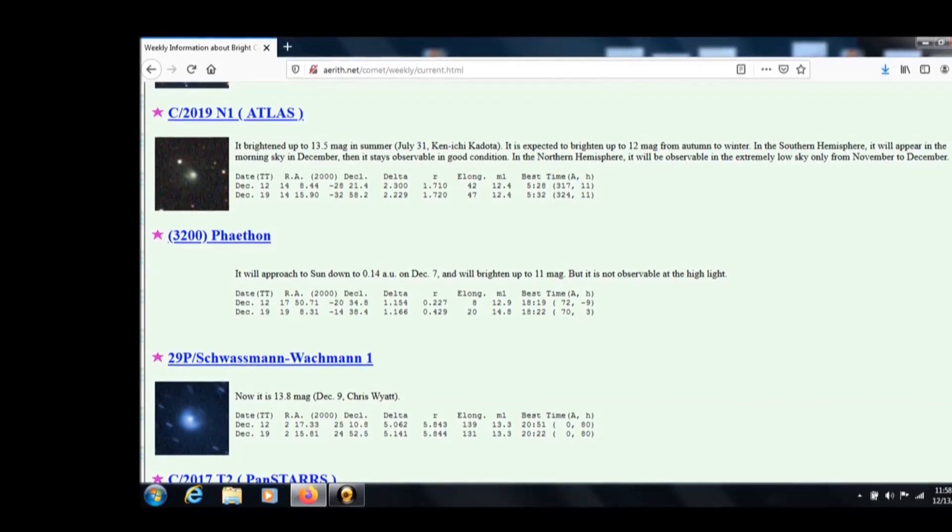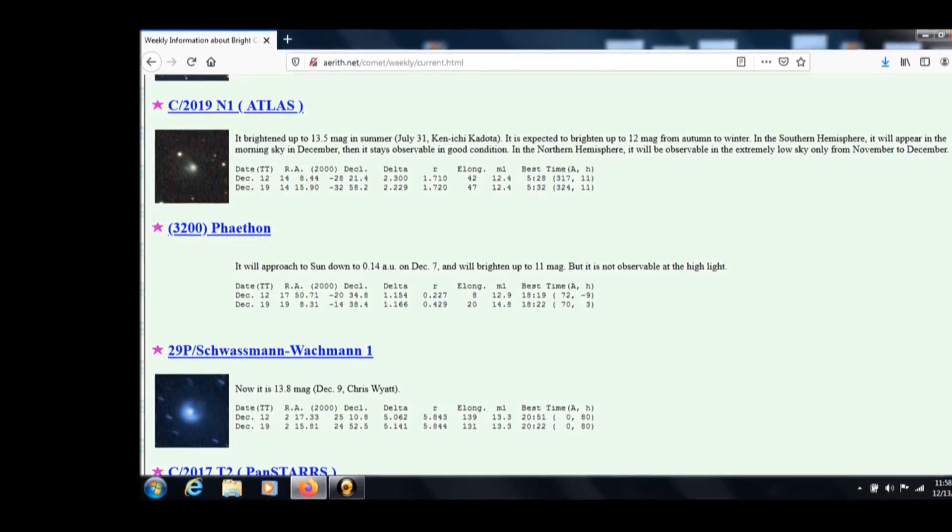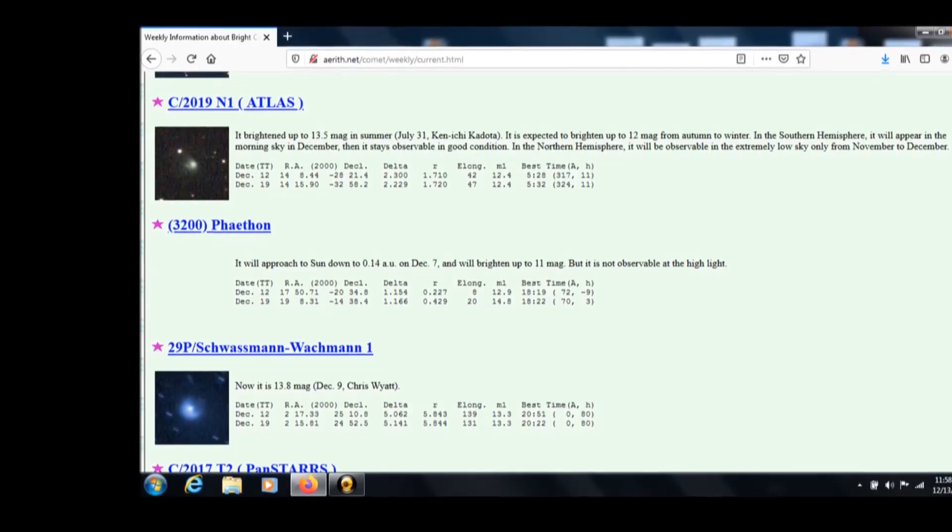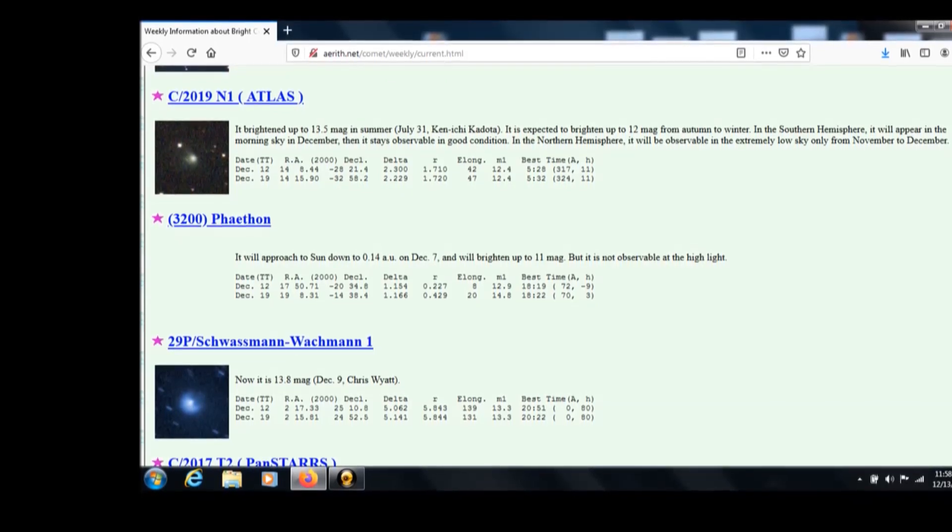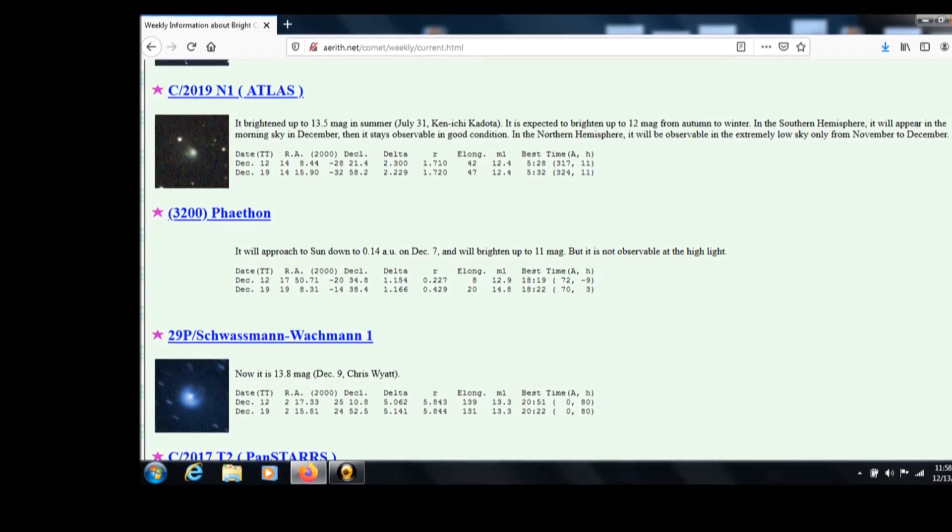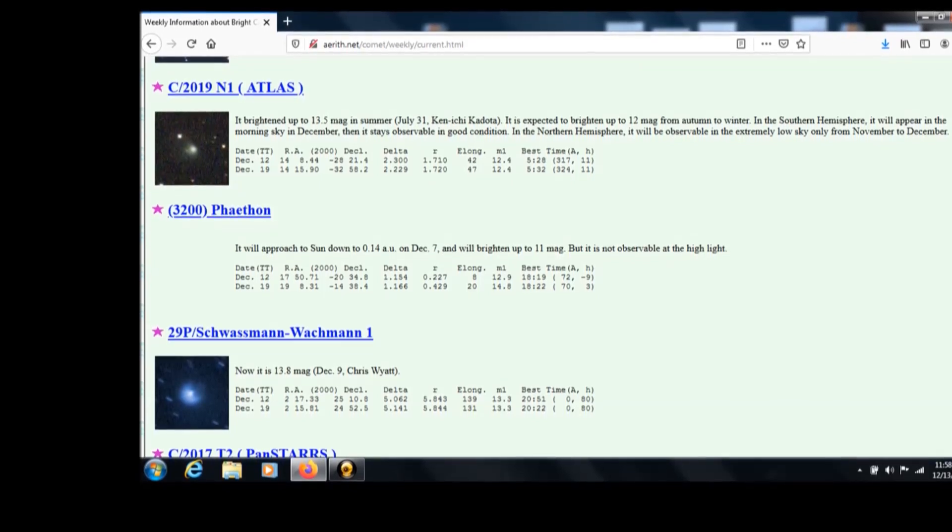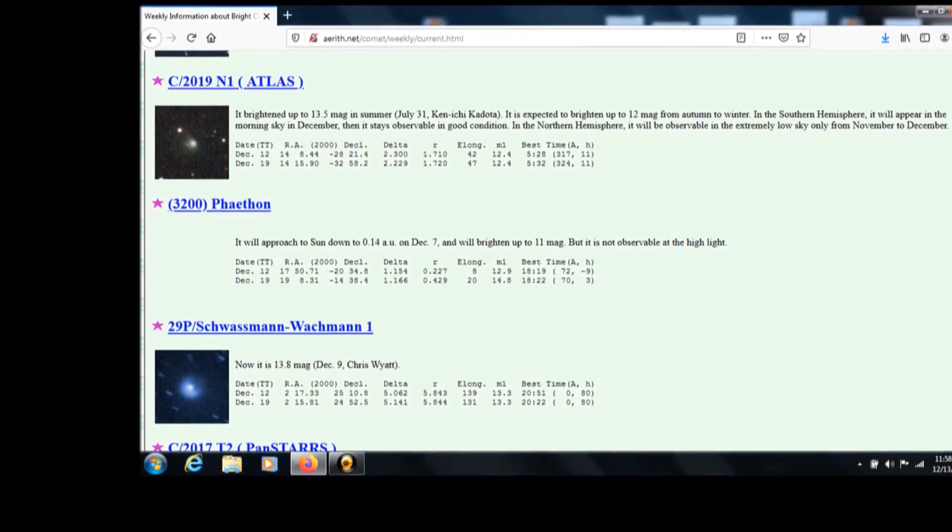And there's also 156p Russell Linear brightened rapidly and is bright at 10.3 December 9th. Again, visible northern hemisphere, observable in good conditions. For a long time in the southern hemisphere, it will be extremely low after January.